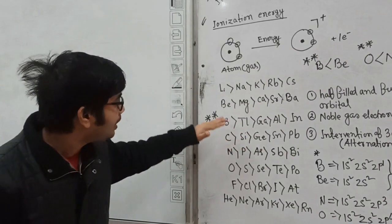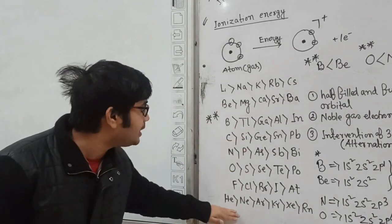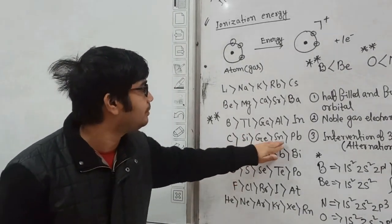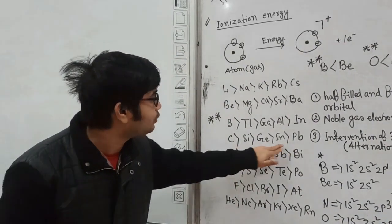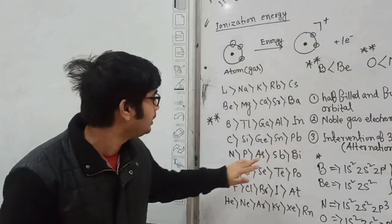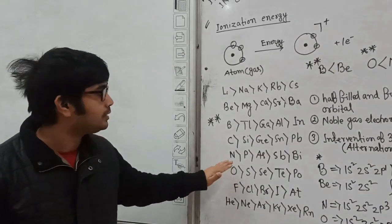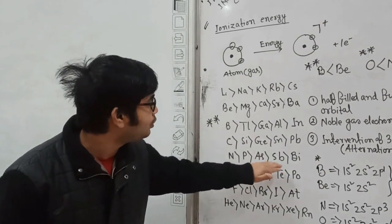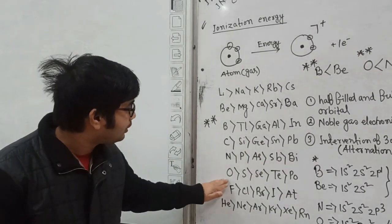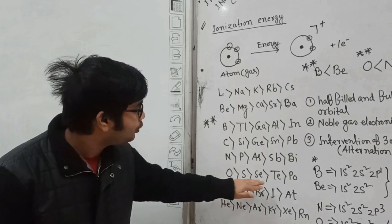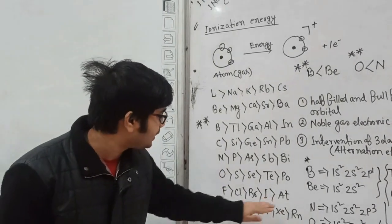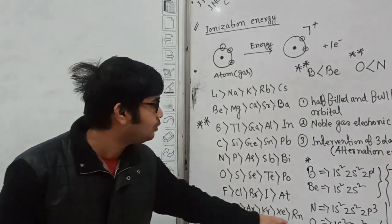All other elements follow the same decreasing order: carbon, silicon, germanium, tin, lead follow this order — ionization energy decreases from carbon to lead. Again, ionization energy decreases from nitrogen to bismuth, and similarly from oxygen to polonium, fluorine to astatine, and helium to radon.